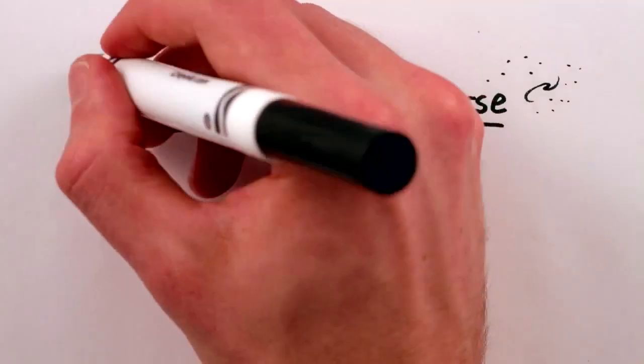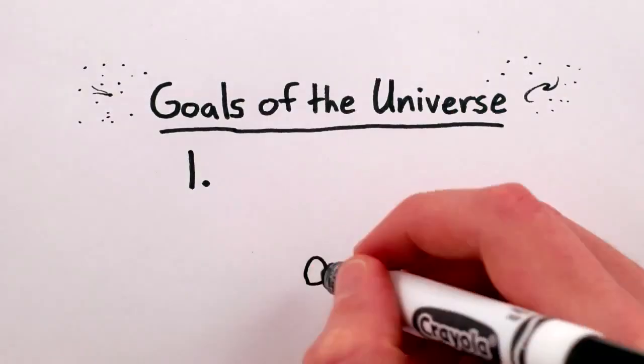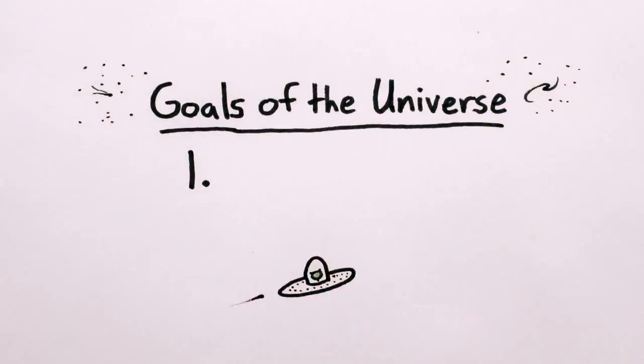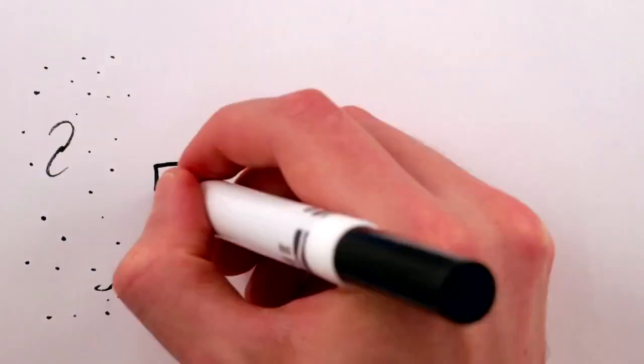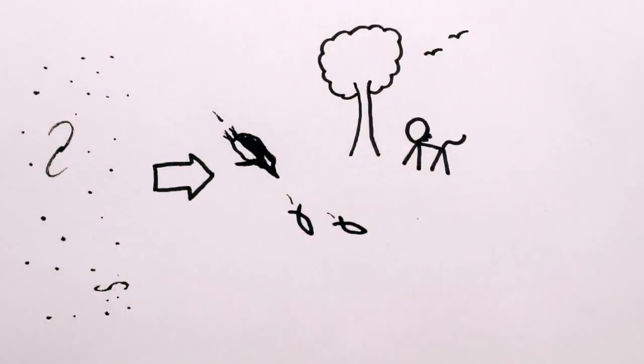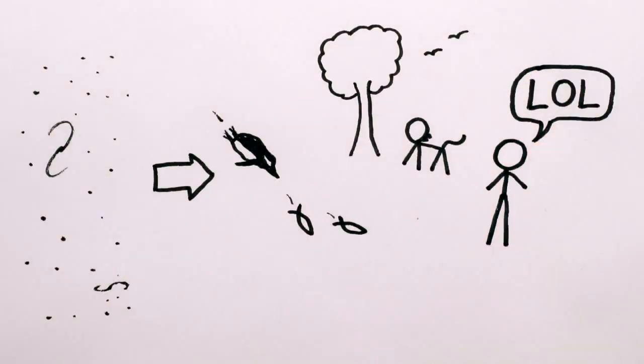To assert that the universe has a purpose implies a desired outcome. But who would do the desiring? And what would a desired outcome be? That carbon-based life is inevitable? Or that sentient primates are life's neurological pinnacle?